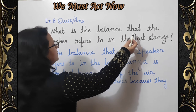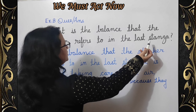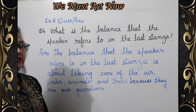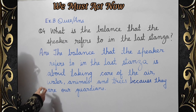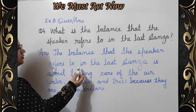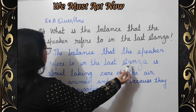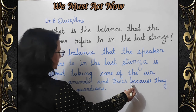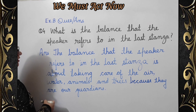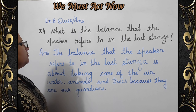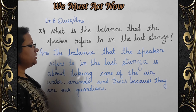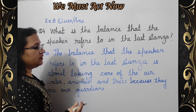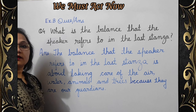Question four: What is the balance that the speaker refers to in the last stanza? Answer: The balance the speaker refers to in the last stanza is about taking care of the air, water, animals and trees because they are our guardians. پویم کے last stanza میں پویٹ اس سنتولن کی بات کرتا ہے جس میں ہمیں ہوا، پانی، جانور اور درختوں کا دھیان رکھنا چاہیے کیونکہ یہ ہمارے guardians ہیں۔